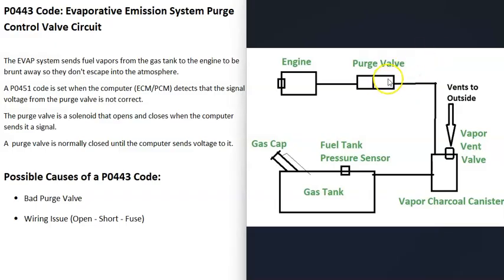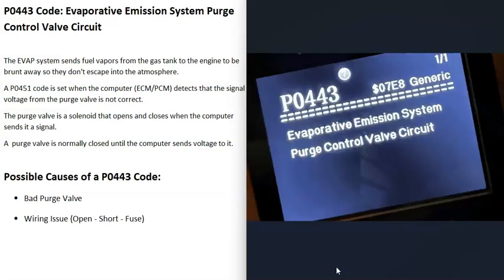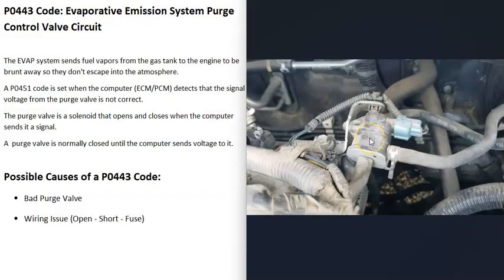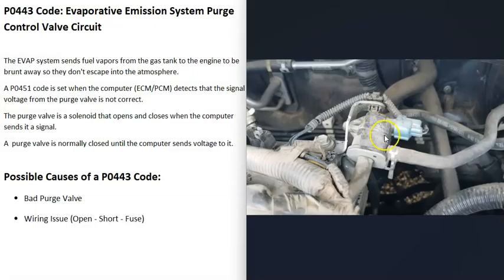When you get this P0443 code, the computer is seeing some kind of problem with this valve. So it's going to be troubleshot to find out why. The first possible cause is that the purge valve has just gone bad and needs to be replaced. These purge valves have two hoses going to them — one hose goes down to the charcoal canister where all the gas vapors come in. As soon as the computer sends the purge valve a signal, it opens and all the gas vapors go through to another hose and into the engine to be burnt away.